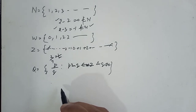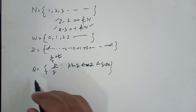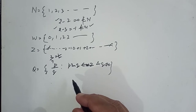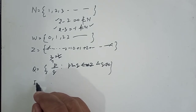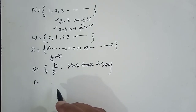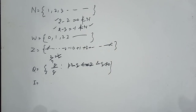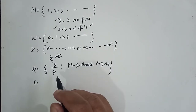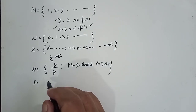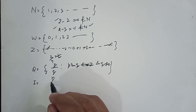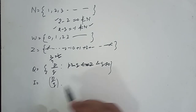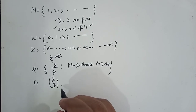Now we define I as irrational numbers. The numbers which cannot be expressed as P upon Q are called irrational numbers. For example, all numbers under a square root, cube root, fourth root, and so on are called irrational numbers.